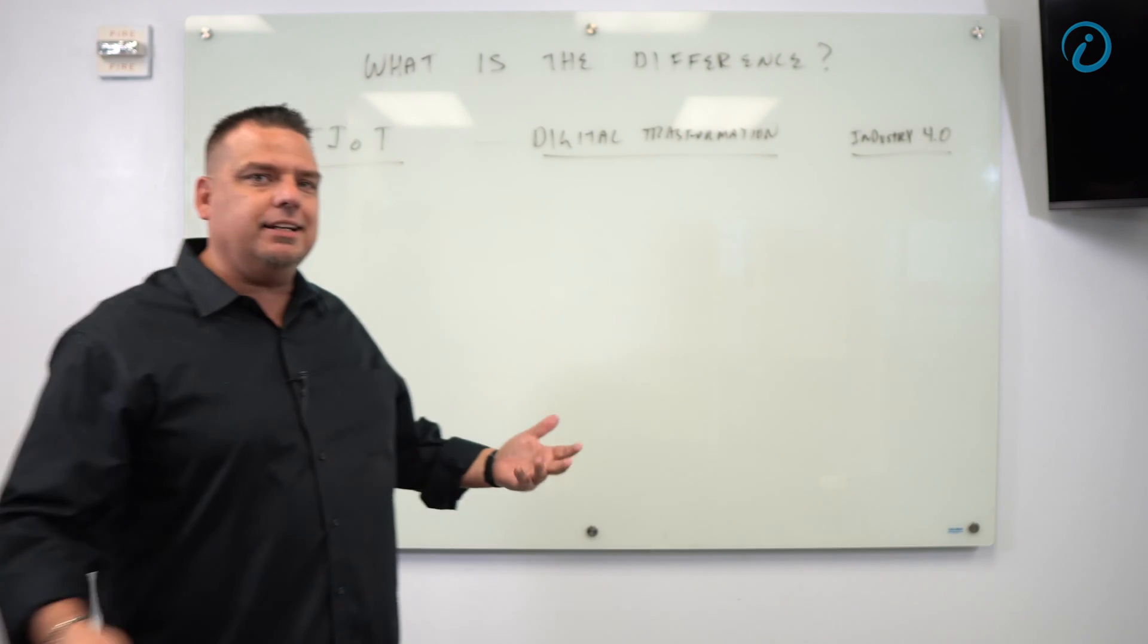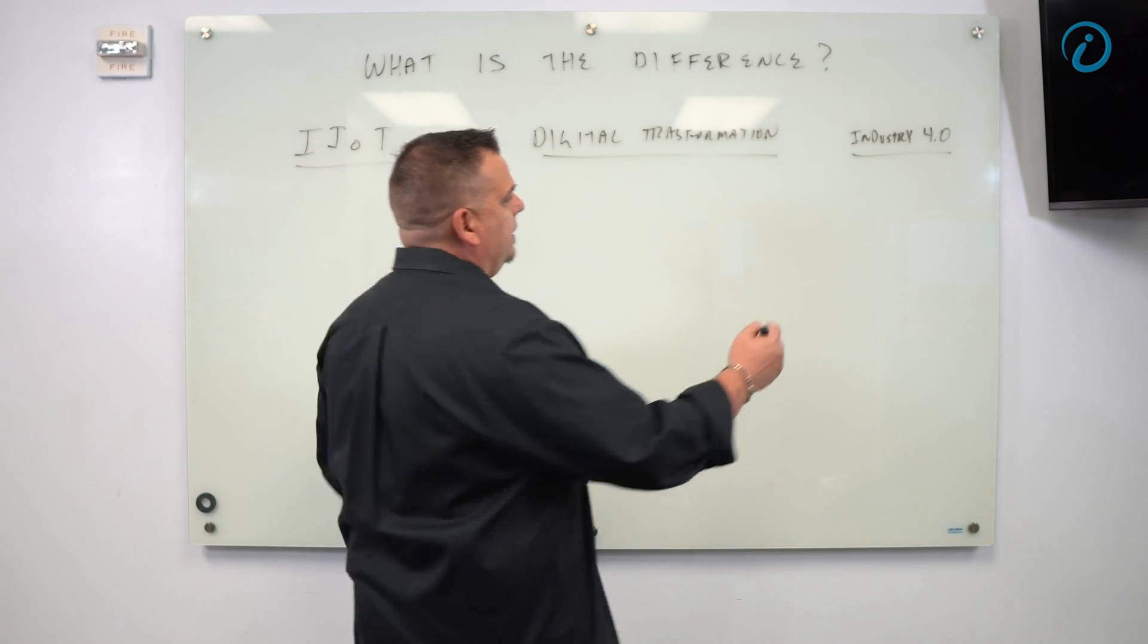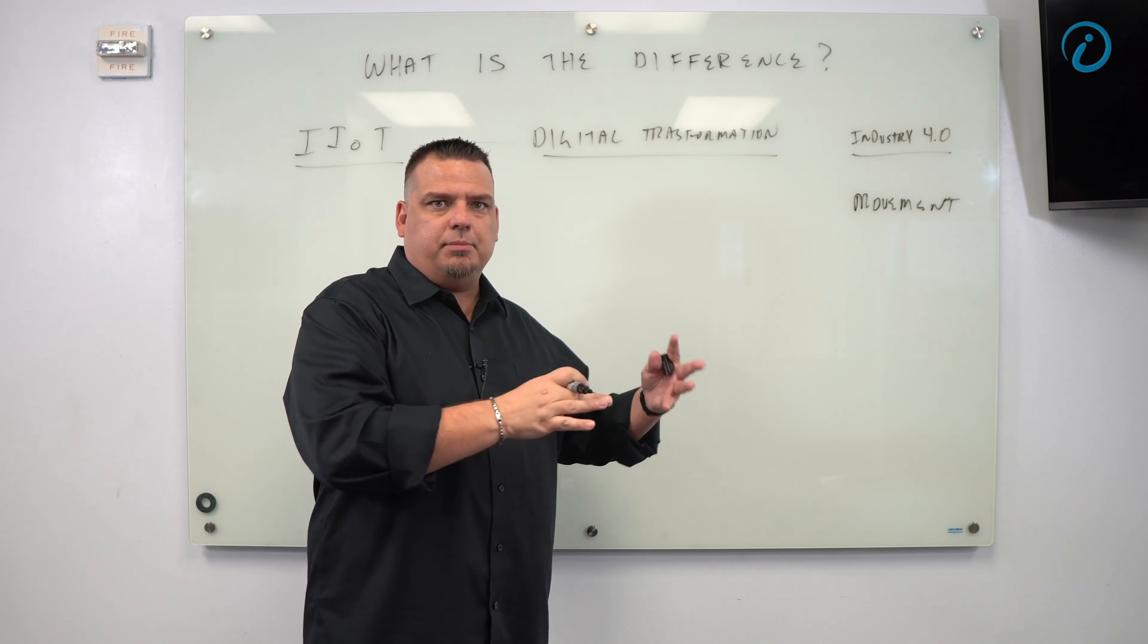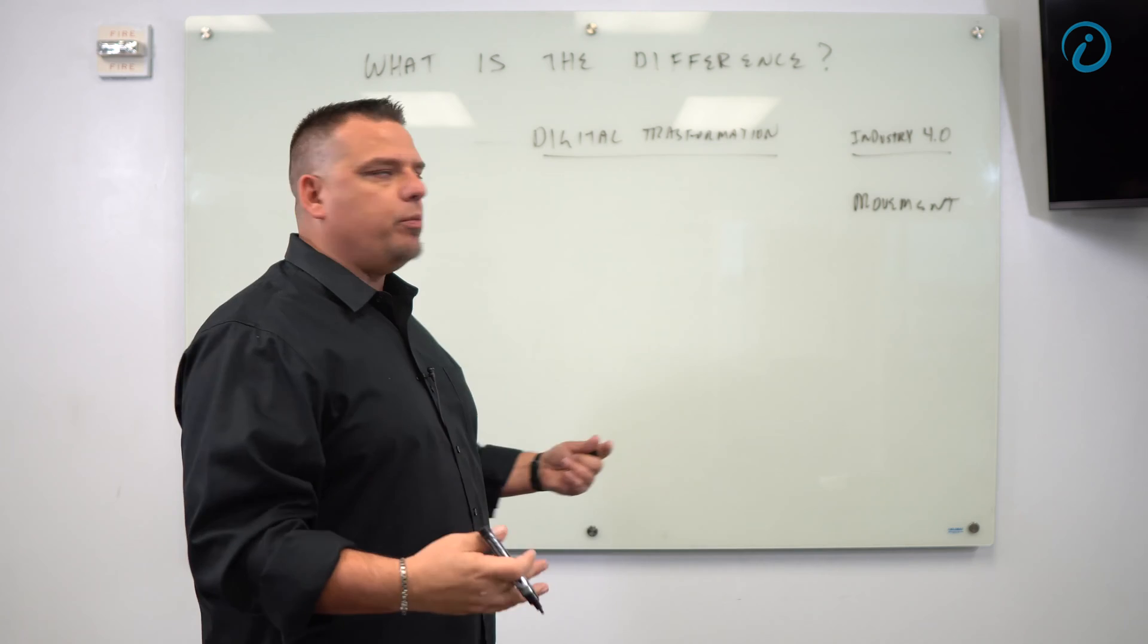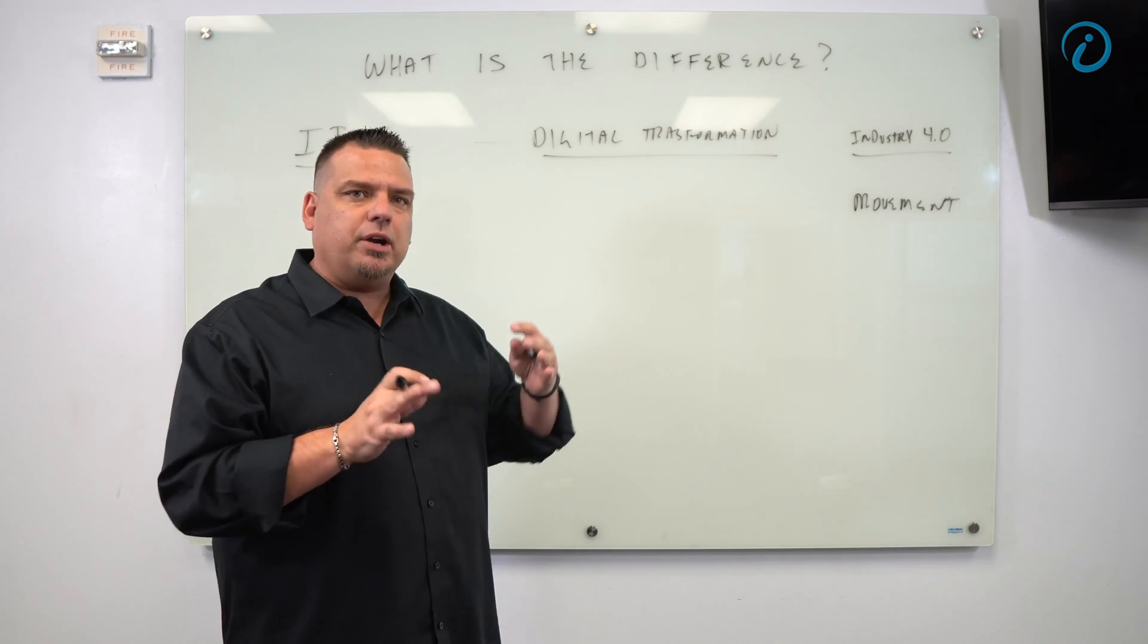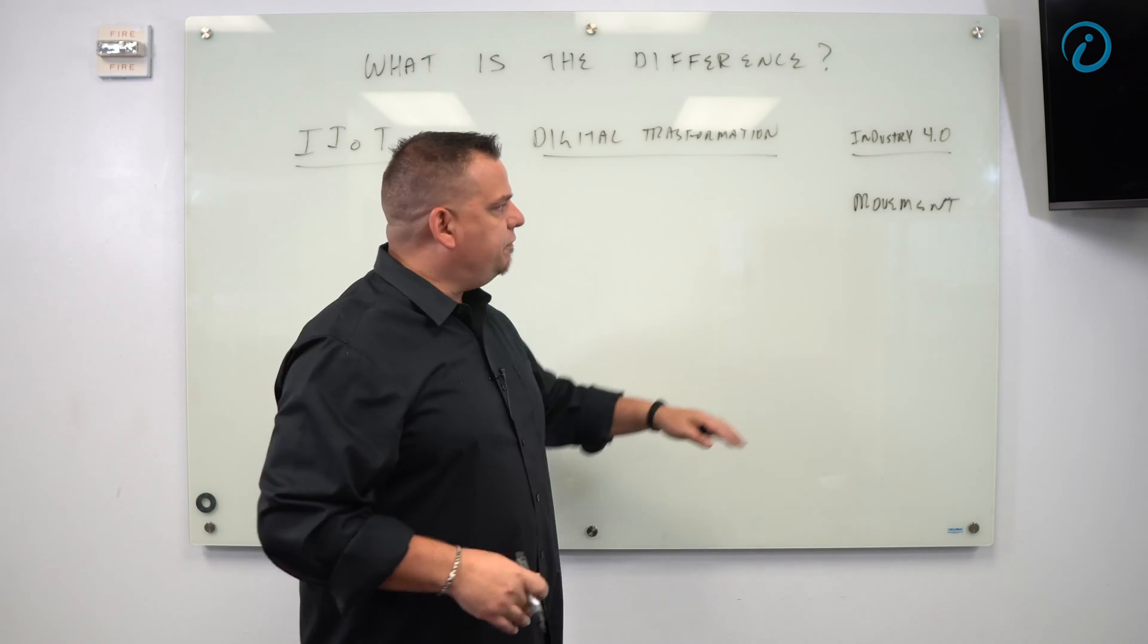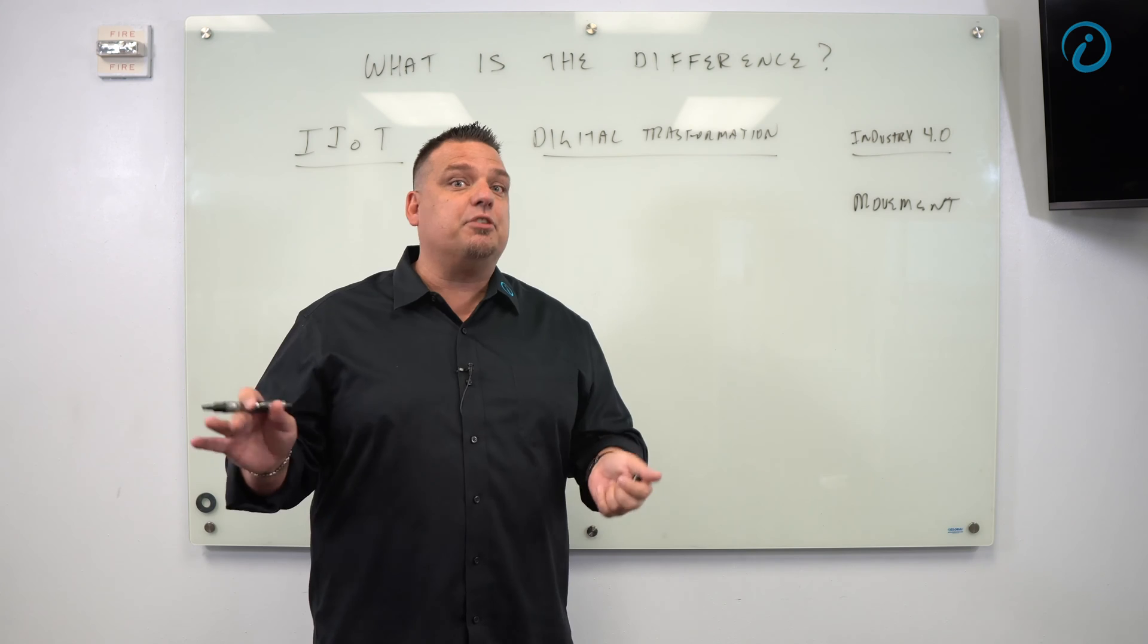Industry 4.0 is the movement. It's the time, the place we are in time. We are experiencing the fourth industrial revolution, and it really started about a decade ago, but it got its real legs in the last five years. Industry 4.0 simply means we are in the fourth industrial revolution. The third industrial revolution was automation. Automation created data. The fourth industrial revolution is about translating data into information.